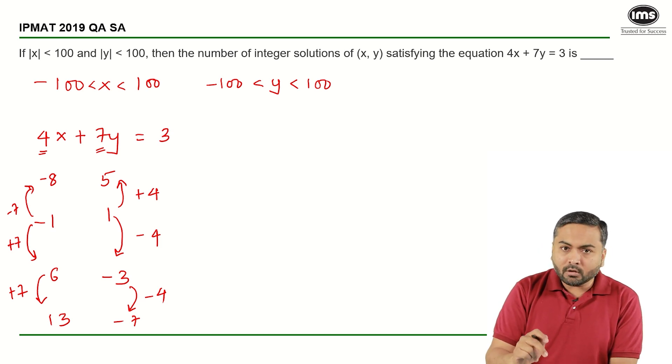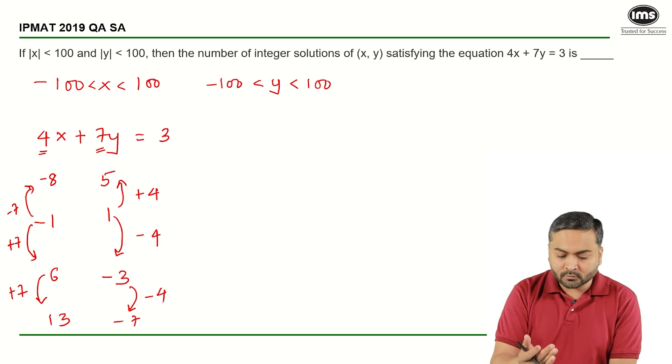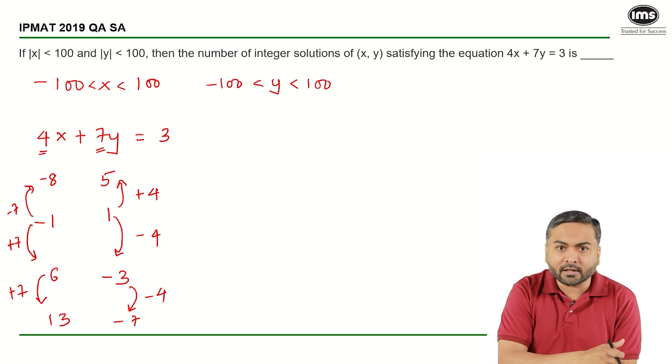So, the best way to solve this question is to only find out how many values can x assume. Because if x assume certain number of values, y will definitely have the corresponding values for x, right?